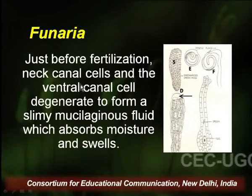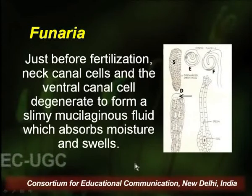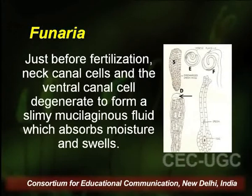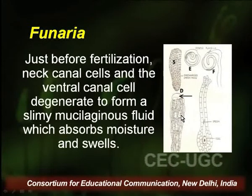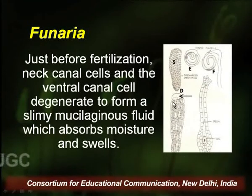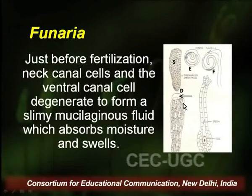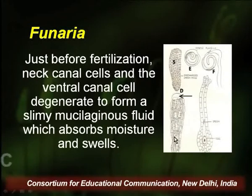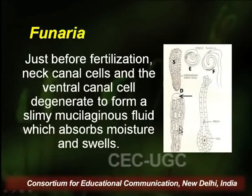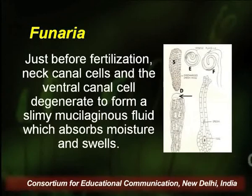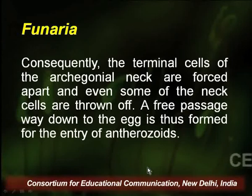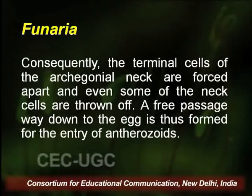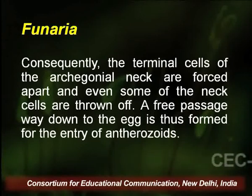Just before fertilization, the neck canal cells and venter canal cells degenerate to form a slimy mucilaginous fluid which absorbs moisture and swells. These mucilaginous mounds act as chemo-attractants — they are rich in sugar compounds, amino acids, certain alkaloids, and minerals — and attract the biflagellate antherozoids. Consequently, the terminal cells of the archegonial neck are forced apart, some neck cells are thrown off, and a free passageway down to the egg is formed for the entry of antherozoids.